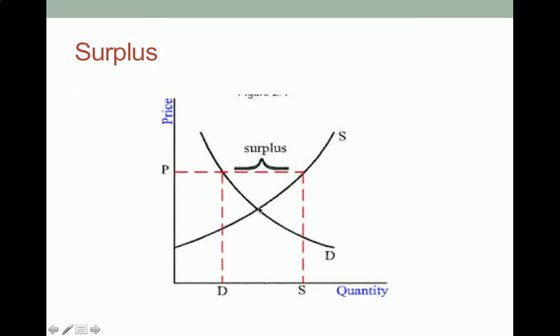And here is a situation where we have equilibrium price here, equilibrium quantity, but the price that was set was too high. So this is the quantity that suppliers are willing to supply at that price. But at that price, consumers only want this much.